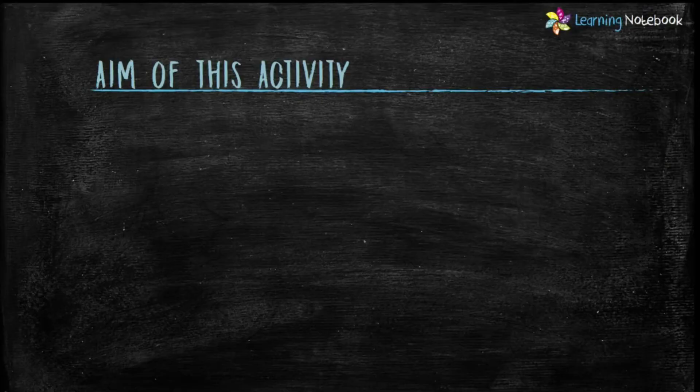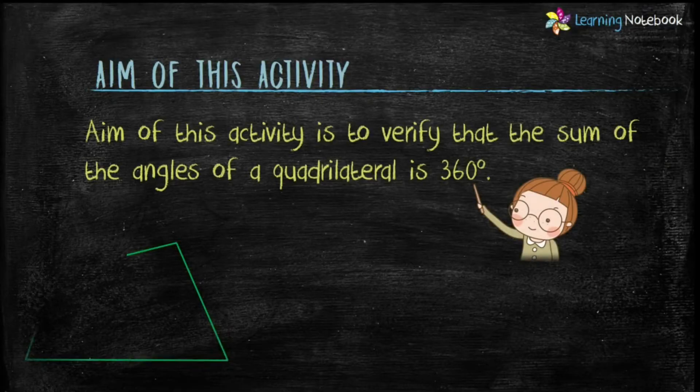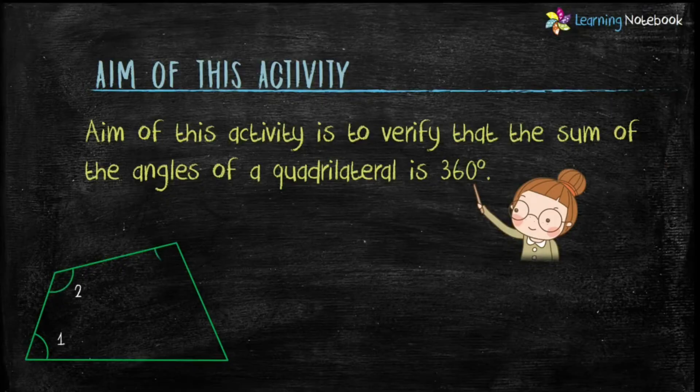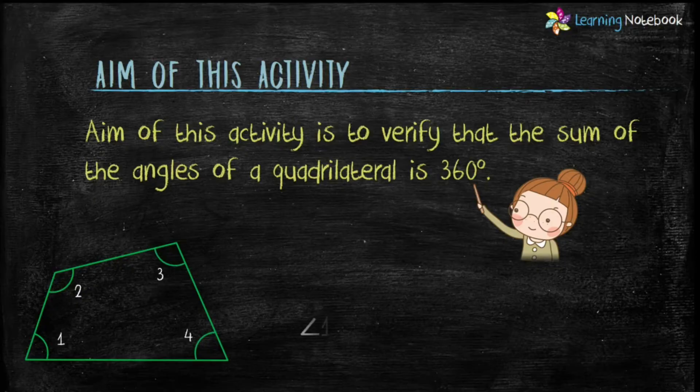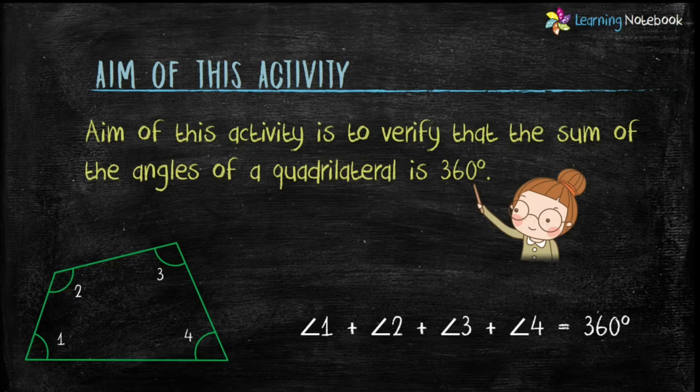Students, aim of this activity is to verify that the sum of the angles of a quadrilateral is 360 degrees, which means angle 1 plus angle 2 plus angle 3 plus angle 4 equals to 360 degrees.